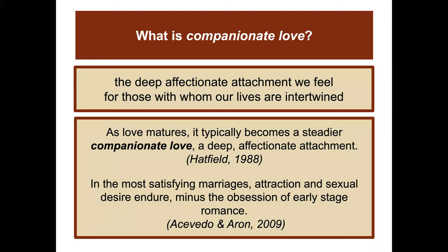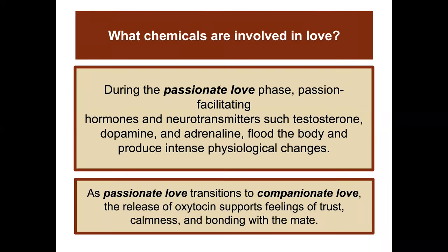What chemicals are involved in love? During the passionate love phase, passion-facilitating hormones and neurotransmitters such as testosterone, dopamine, and adrenaline flood the body and produce intense physiological changes. As passionate love transitions to companionate love, the release of oxytocin supports feelings of trust, calmness, and bonding with the mate.